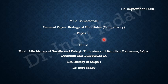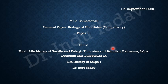The topic we are doing is the life history of sacyl and pelagic tunicates — Ascidian, Pyrosoma, Salpa, Doliolum, and Oikopleura. I have finished with Pyrosoma, Doliolum, and Oikopleura, and now it is the turn of the animal Salpa. So let's begin with Salpa.